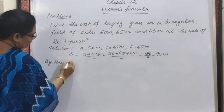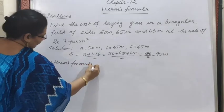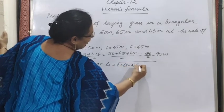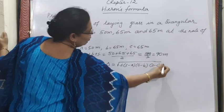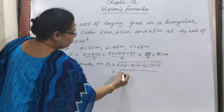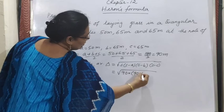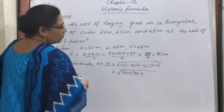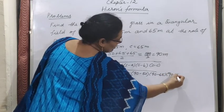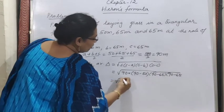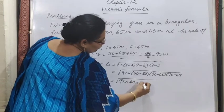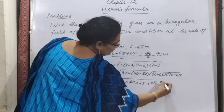By Heron's formula, area of the triangle = √(s × (s−a) × (s−b) × (s−c)). Substituting: s = 90, s−a = 90−50 = 40, s−b = 90−65 = 25, s−c = 90−65 = 25. So area = √(90 × 40 × 25 × 25).